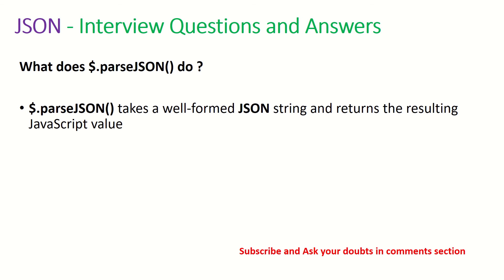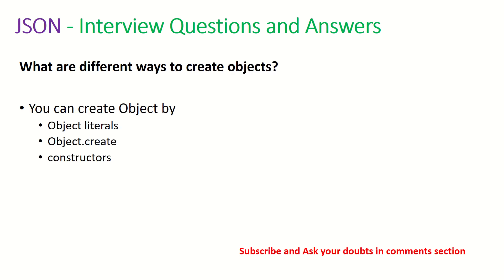What does $.parseJSON do? $.parseJSON takes a well-formed JSON string and returns the resulting JavaScript value. What are the different ways to create objects? You can create an object using object literals, using Object.create, and also using constructors.